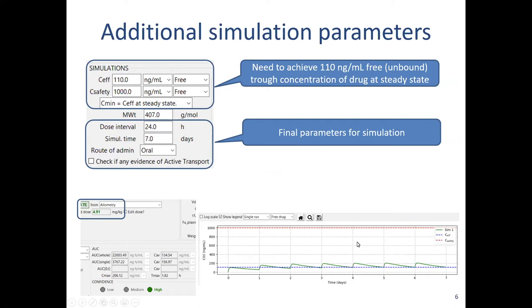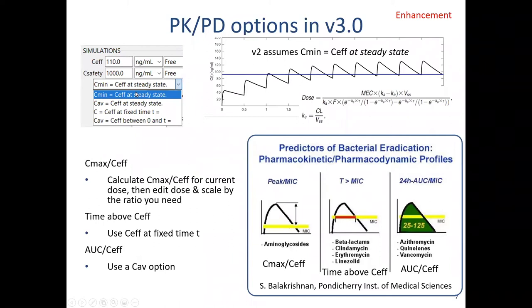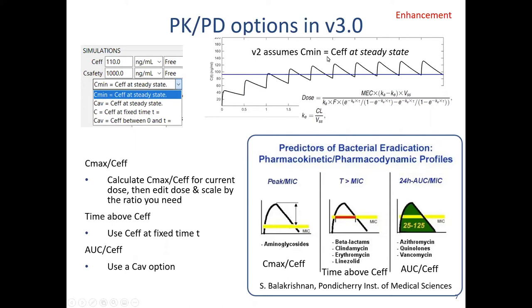You'll end up with a human dose prediction and a concentration-time graph. In version two and version one, the tool assumes you want to achieve the efficacious concentration as the minimum that the plasma concentration reaches at steady state. You can see here a drug giving a lot of accumulation, dosed 12-hourly, and after a few days it reaches steady state. The blue line signifies the efficacious concentration, and the dose is calculated using this equation to ensure you achieve this concentration at steady state.